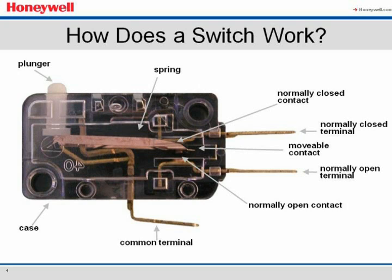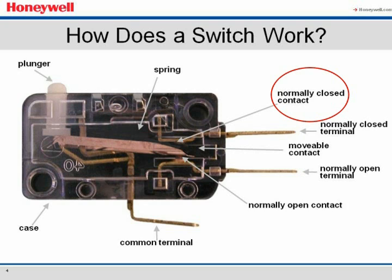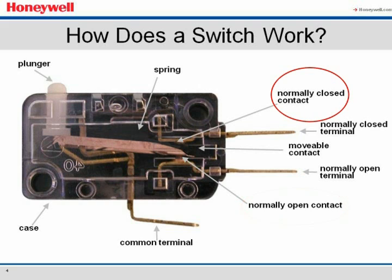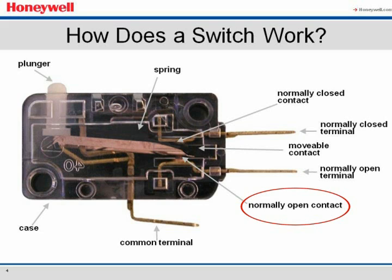At the operating point, without further movement of the plunger, the common contact accelerates away from the normally closed contact. Within a few milliseconds, the common contact strikes, bounces, and comes to rest against the normally open contact. Because the mechanism is designed for a snap action, the common contact cannot stop part of the way between the normally closed and normally open contacts. The normally closed circuit is now open, and the normally open circuit is closed. As the plunger is depressed past the operating point, the normally open circuit remains closed, and the normally closed circuit remains open.